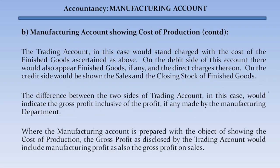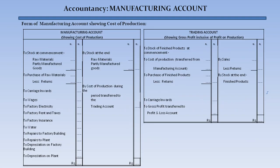The trading account in this case would stand charged with the cost of finished goods on the debit side, along with any finished goods and direct charges thereon. On the credit side would appear sales and the closing stock of finished goods. The difference between the two sides would indicate the gross profit inclusive of the profit, if any, made by the manufacturing department. Where the manufacturing account is prepared to show cost of production, the gross profit disclosed by the trading account would include manufacturing profit as well as gross profit on sales.